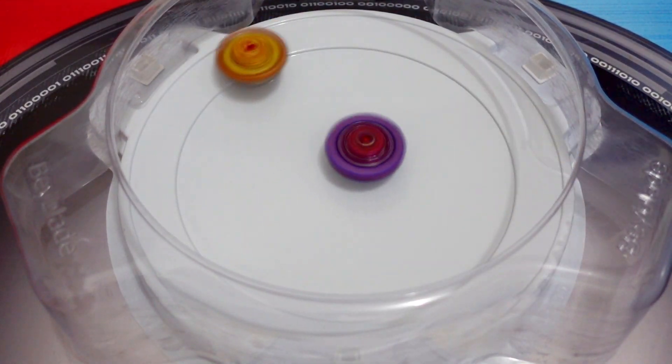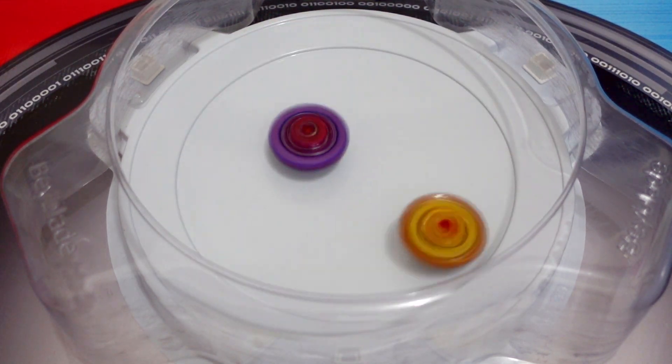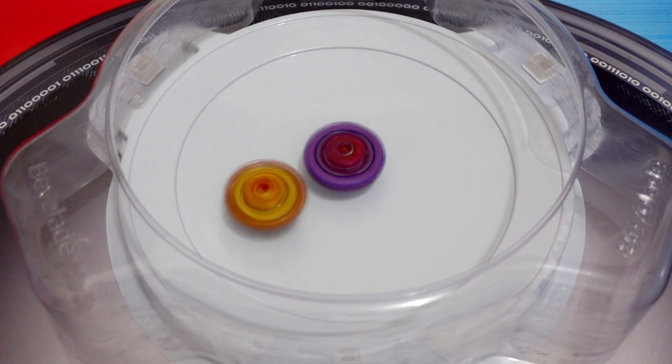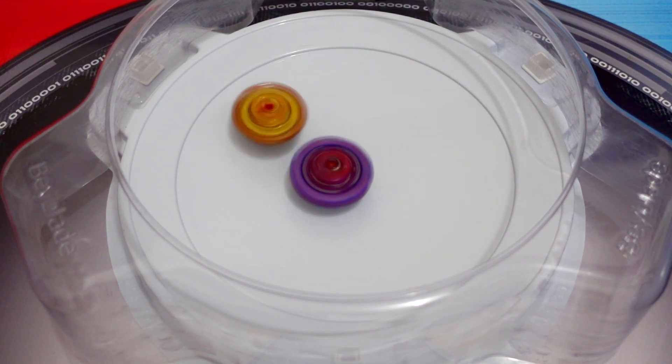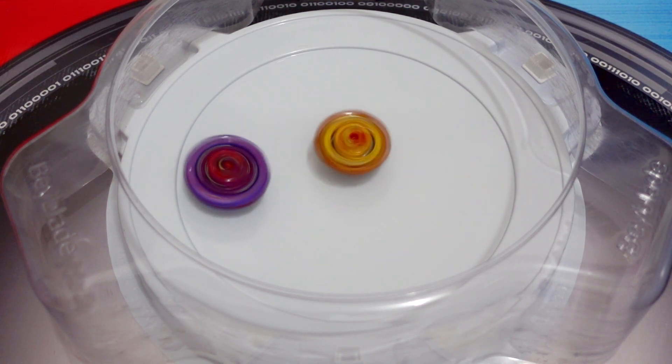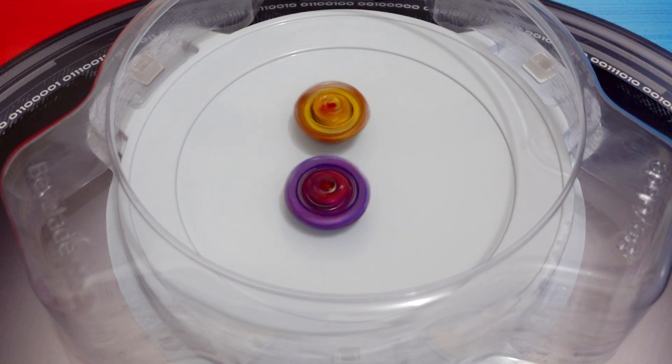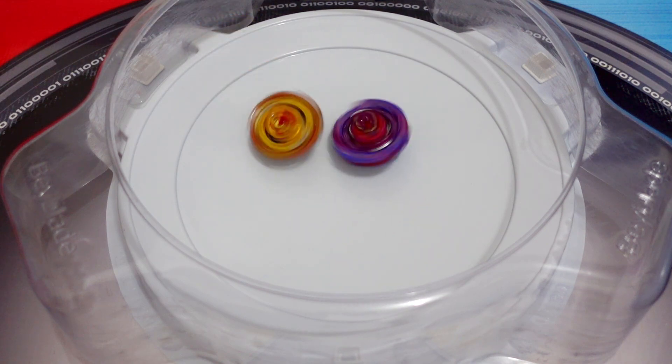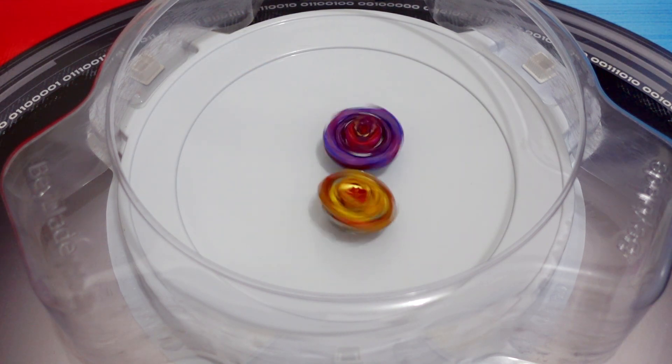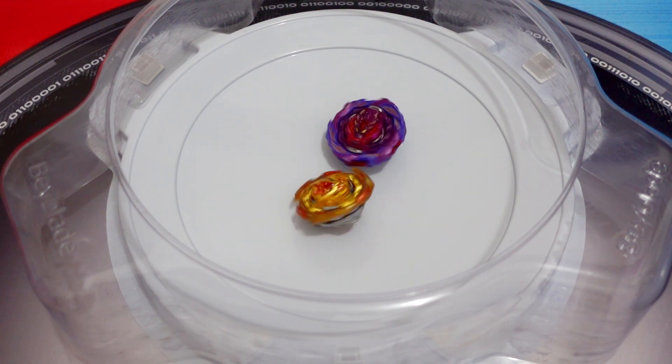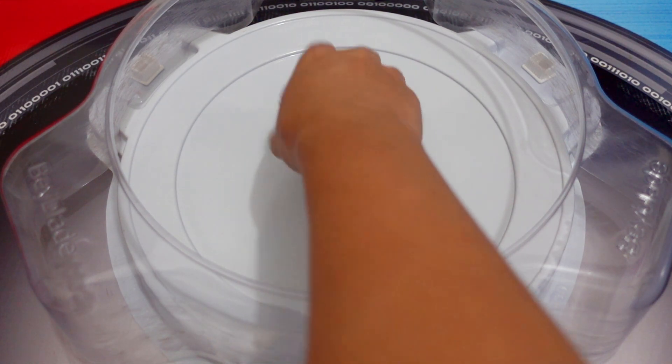Okay, ready? 3-2-1, go. Okay, Roar Bamut from the B-190 all-in-one set is just in the center. And now the Dynamite Belial is attacking it. The gold Dynamite Belial. Nice hit. Who's going to win the stamina battle? Of course, it's Roar Bamut.